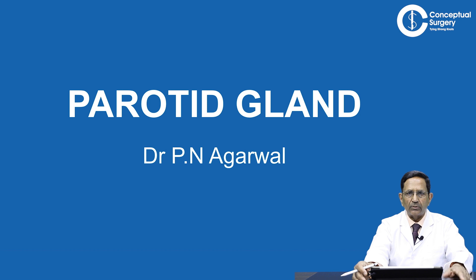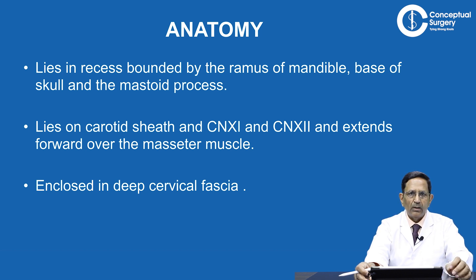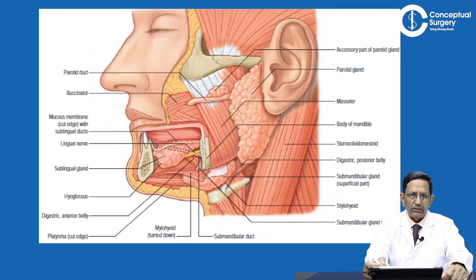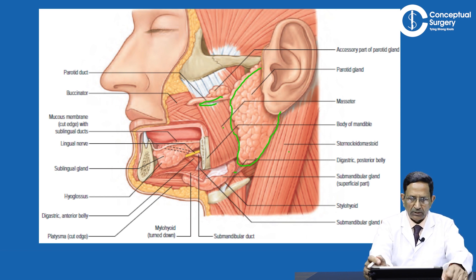Our aim now, clinically it was alright, so what should you be doing for confirmation of the diagnosis? Before that, a little bit of anatomy: as you all know, the parotid gland is bounded by the ramus of mandible, base of skull and mastoid. It lies over the carotid sheath in relation to the 11th and 12th cranial nerves and is enclosed in deep cervical fascia. This is the anatomy — you can see the parotid duct, the masseter muscle, and the whole of the parotid gland. It is in relation to the sternocleidomastoid and the digastric muscle. Salivary secretion occurs through the Stensen's duct opening at the upper second molar.